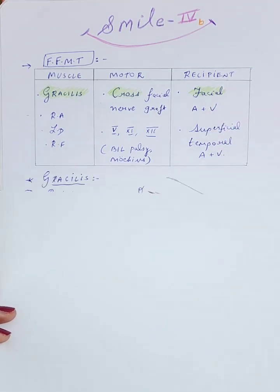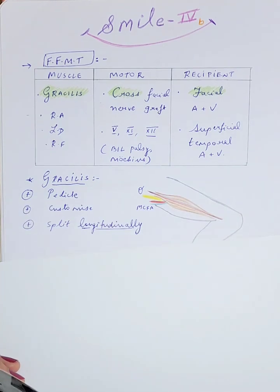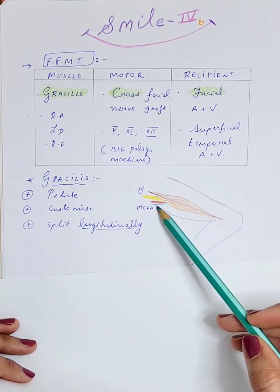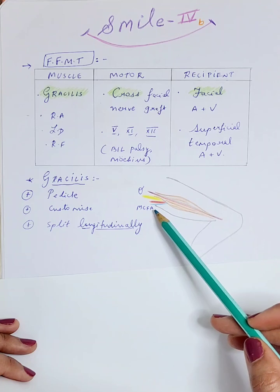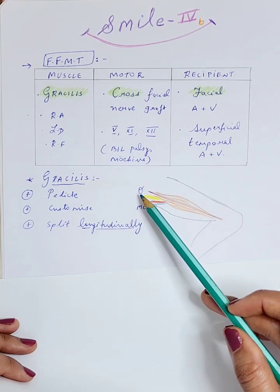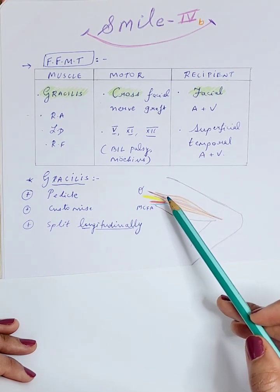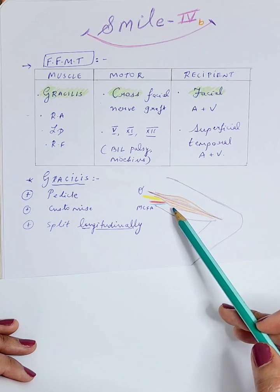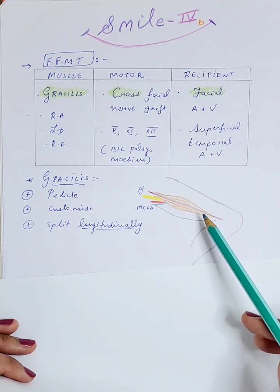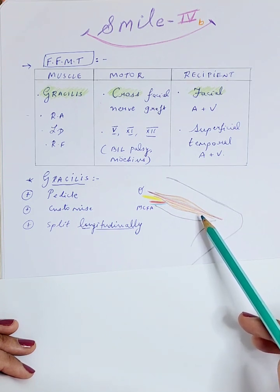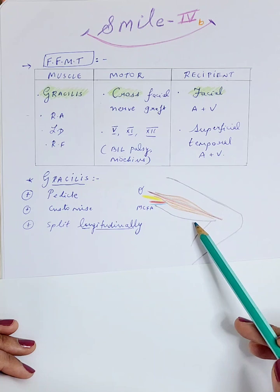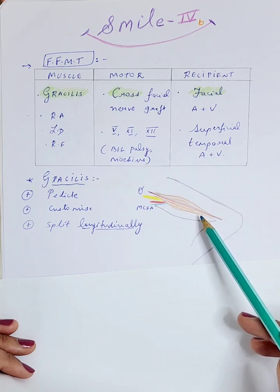Now the gracilis muscle is popular for many reasons. First of all, it gives us a good pedicle length from the medial circumflex femoral artery and vein. The obturator nerve, its anterior division which supplies the gracilis, is of good length as well. The muscle is dispensable, meaning we have minimal donor site functional problems. The scar is well hidden.